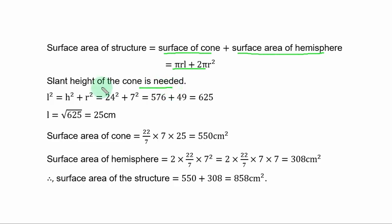Slant height of the cone is needed. From the relationship among slant height, the vertical height and radius, which is L squared equal to H squared plus R squared, you can get the slant height.